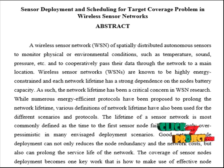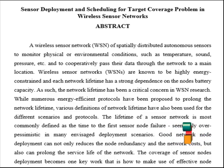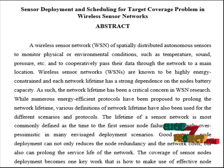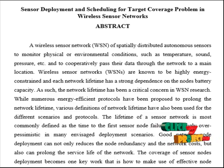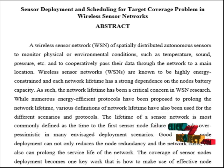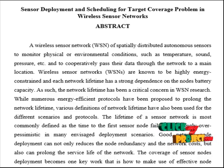In the ABC algorithm, it initializes the population solution based on the number of sensor nodes. With that population solution, evaluate the fitness function so as to achieve a new solution which is better than the old solution. Finally, update the best solution for the maximum cycle.